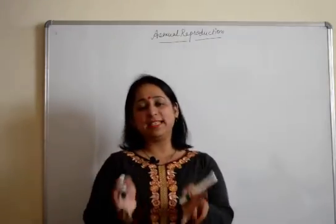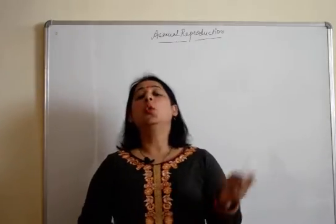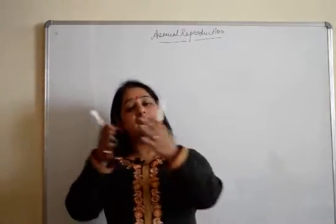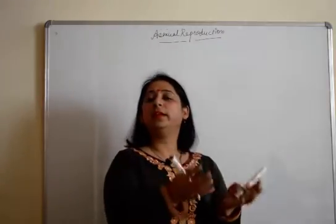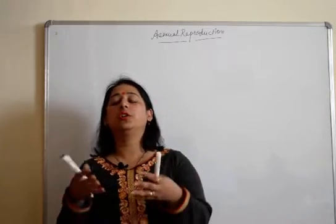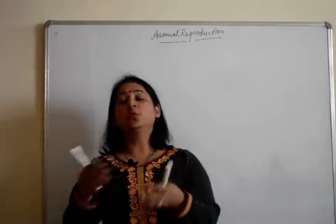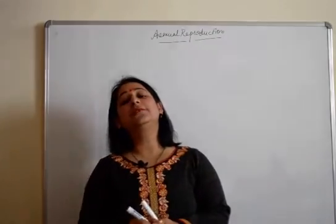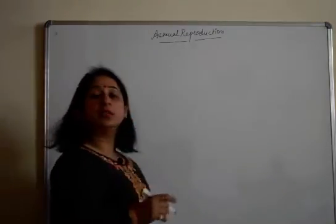Starting up with asexual reproduction - as we all know, asexual reproduction is the type of reproduction in which only a single organism is required. Only a single organism gives rise to the daughter organisms; there are no separate male and female sexes required in order to fertilize and form new organisms. So this is asexual reproduction, and we are going to study its different types.